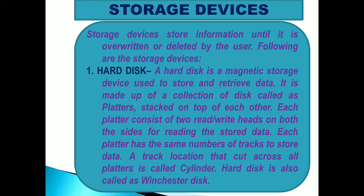Storage devices store information until it is overwritten or deleted by the user. The first and most important is the Hard Disk, a magnetic storage device used to store and retrieve data. It is made up of a collection of disks called platters stacked on top of each other. Each platter consists of two read/write heads on both sides for reading the stored data. A track location that cuts across all platters is called a cylinder. The hard disk is also called a Winchester disk.